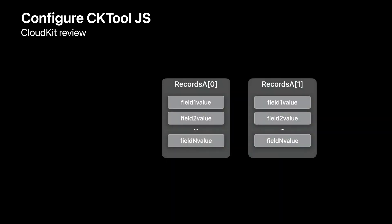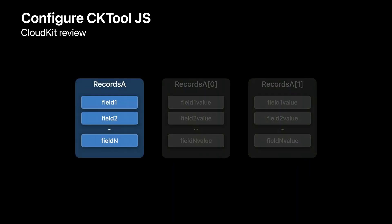Any time you want to use cktool.js in your scripts, you'll first need to configure it for use. But before I dive into configuring cktool.js, I'll do a quick review of what makes up a CloudKit schema. In CloudKit, data is stored in a structured way. Data that has the same kinds of values are stored together as records. Records are instances of record types, and the properties of a record that a record type describes are known as fields. In addition to your user-defined fields, CloudKit adds system fields such as record name, which is the ID of the record.